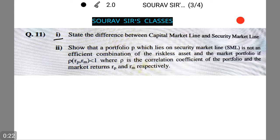Let's start off with the second one. We need to show that a portfolio P which lies on security market line SML is not an efficient combination of the riskless asset and the market portfolio if ρ(Rp,Rm) < 1, where ρ is the correlation coefficient of the portfolio and the market returns Rp and Rm respectively.